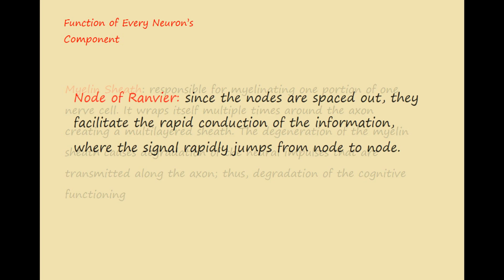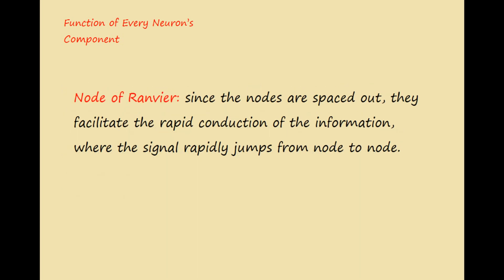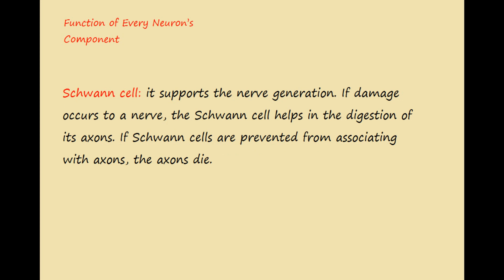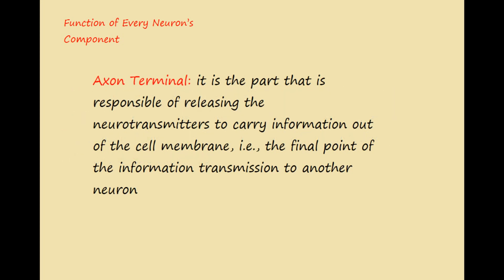The node of Ranvier — since the nodes are spaced out, they facilitate the rapid conduction of information, where the signal rapidly jumps from node to node. Then we have the Schwann cell, which supports nerve regeneration if damage occurs. Finally, the axon terminal is the part responsible for releasing neurotransmitters to carry information out of the cell membrane — that is, the final point of information transmission to another neuron.